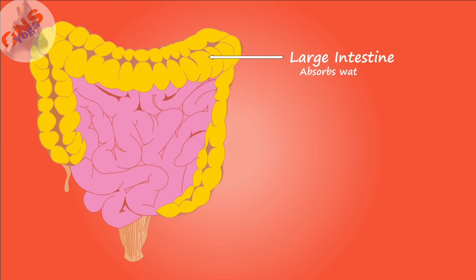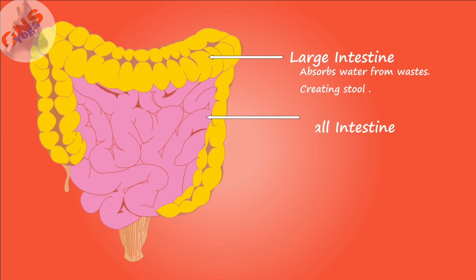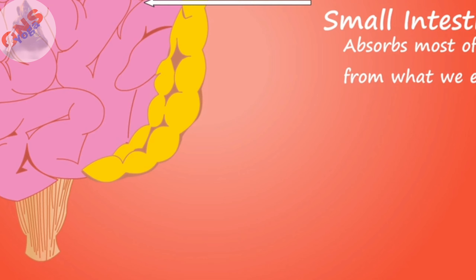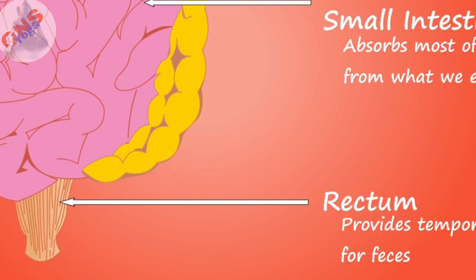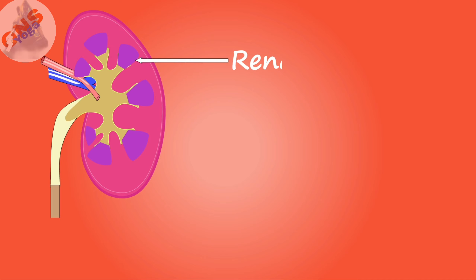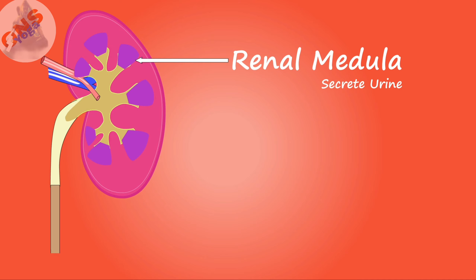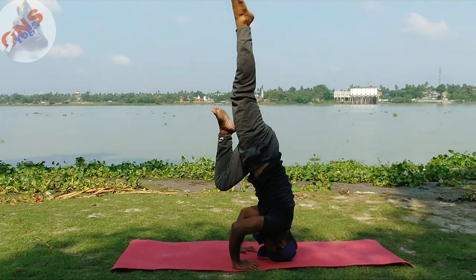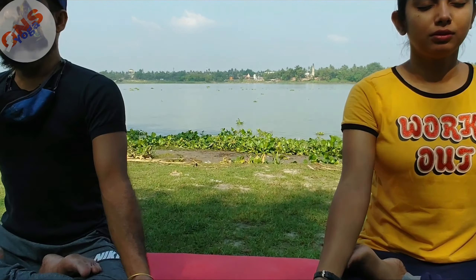Urine and feces are formed during the digestive process in the large intestine. Feces are carried to the rectum for evacuation. Urine is carried to the kidneys for filtration and then stored in the bladder for elimination. Sweat is eliminated through the skin.